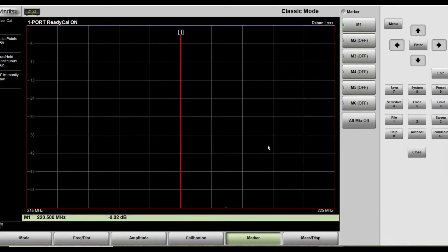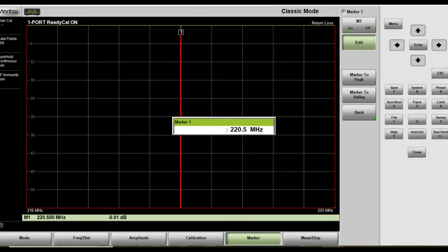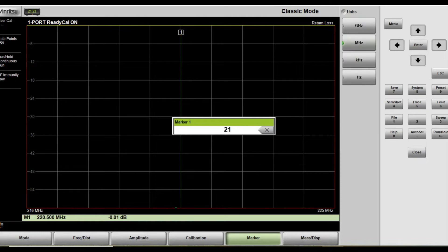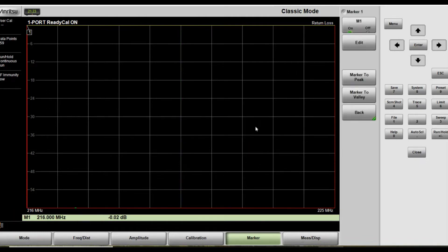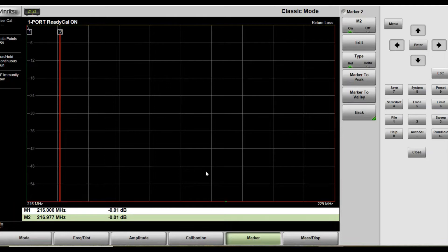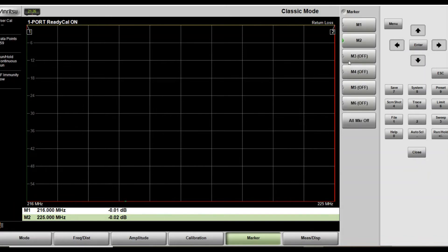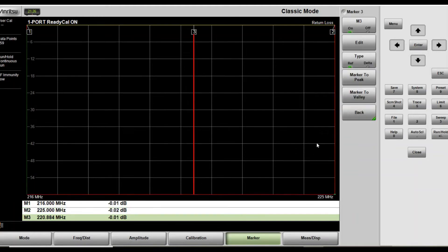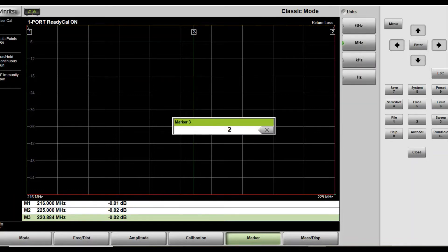The next thing to set up would be the markers. I will start with marker one. Normally, following Anritsu recommendations, you set up your start frequency. Press enter. The second marker would be the end frequency. Press enter. Now, for the third marker, you usually look at all your transmitter frequencies and you take the average. In my case, it's 217.25. Press enter.